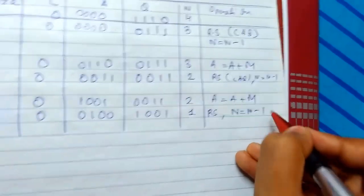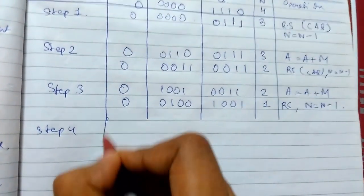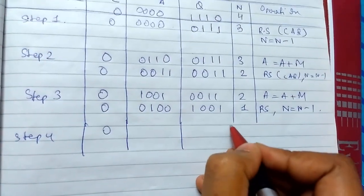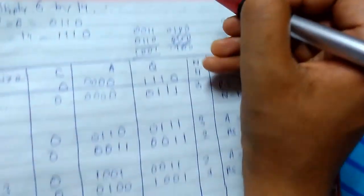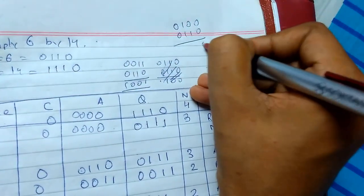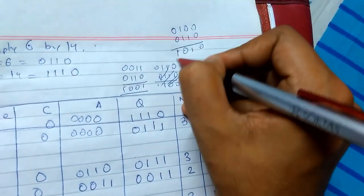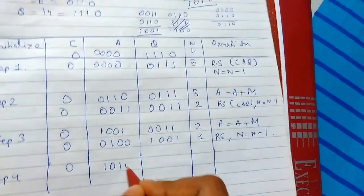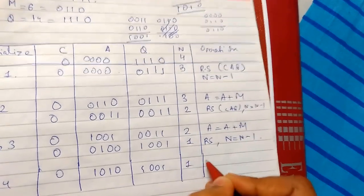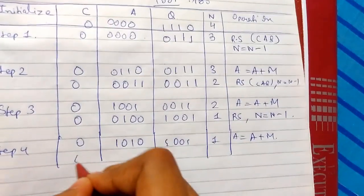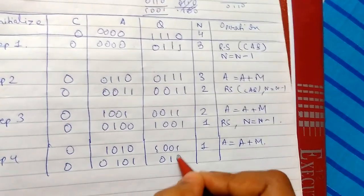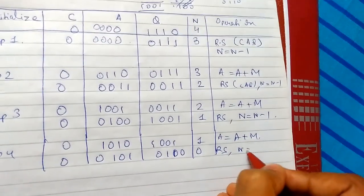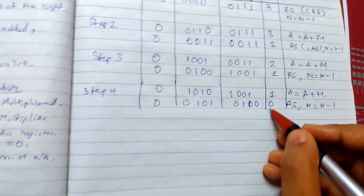Step 4: Q0 is 1, so we update A. A was 0100 and M is 0110, so 0100 + 0110 = 1010. A is updated to 1010. After the final right shift, A becomes 0101. N = N - 1, so now N equals 0, meaning we stop and find the product.